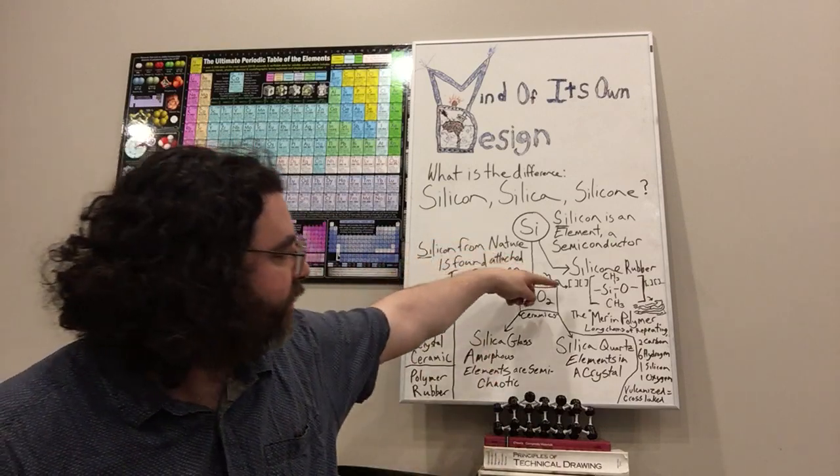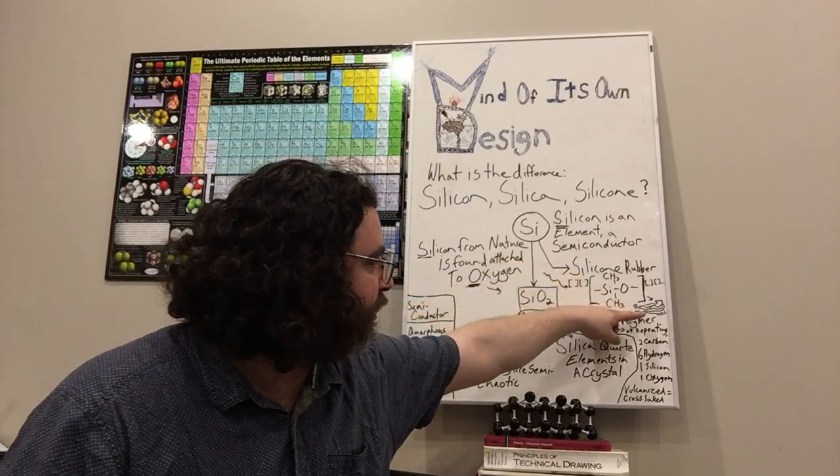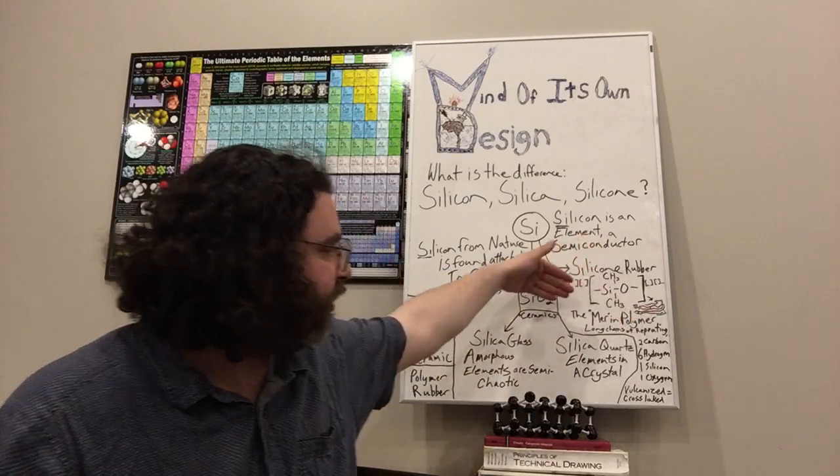You have long chains of this polymer, then they're cross-linked.